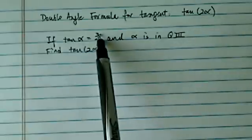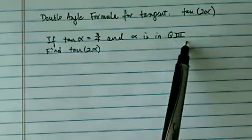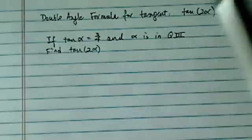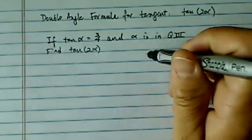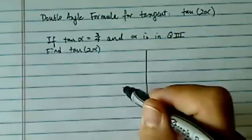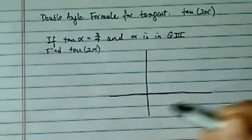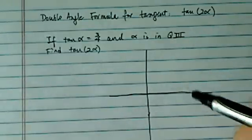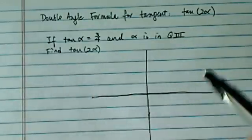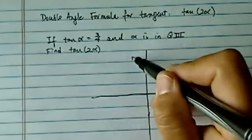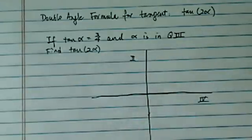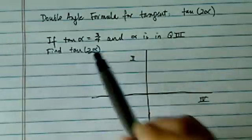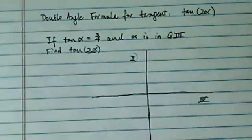We're given that tangent alpha is 3 over 4, and alpha is in quadrant 3, and we're supposed to find tangent of 2 alpha. The trick of this problem is the 2 alpha part — tangent has this bad habit: if you get into quadrant 2 or quadrant 4, tangent is negative. So first we want to make sure tangent of 2 alpha is not in quadrant 2.